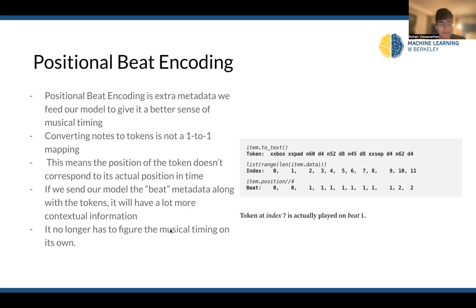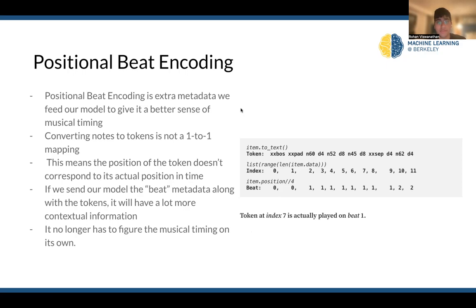The model no longer has to figure out musical timing on its own — it can have some semblance of which notes are on which beat. This parallels other concepts we knew in terms of positional structure. When we were talking about transformers for natural language, we talked about how using sine and cosine functions we can pass in information about the positionality of our text so that our transformer model has some semblance of that. This is very similar for music, which I thought was very interesting.